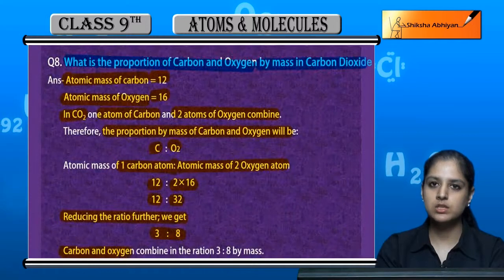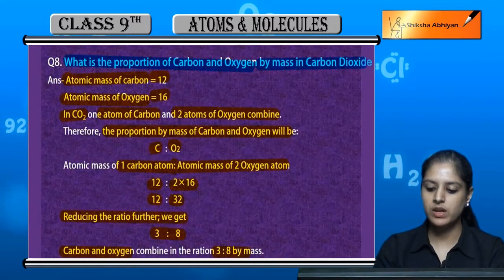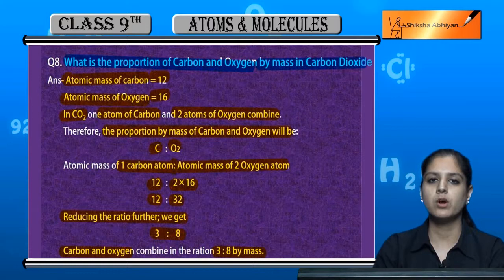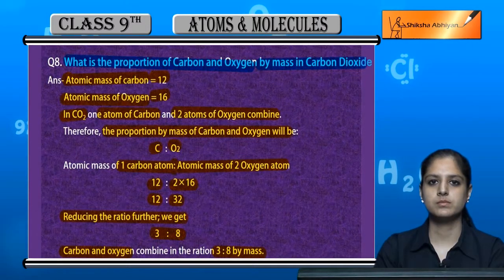So, carbon and oxygen combine in the ratio 3 is to 8 by mass in carbon dioxide.